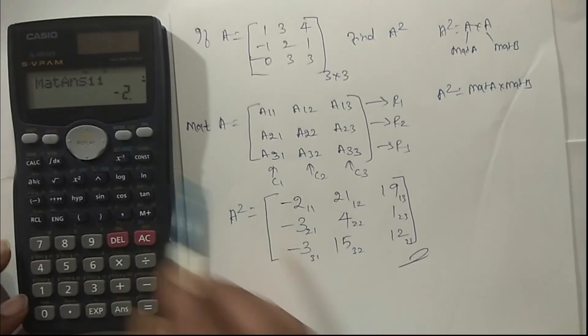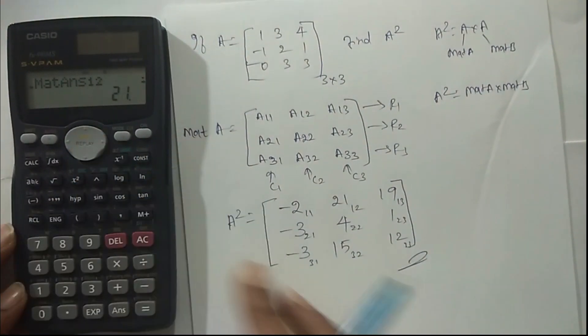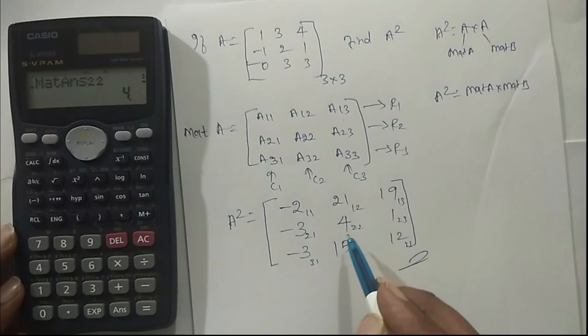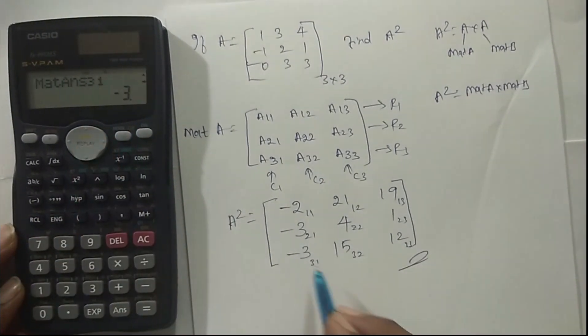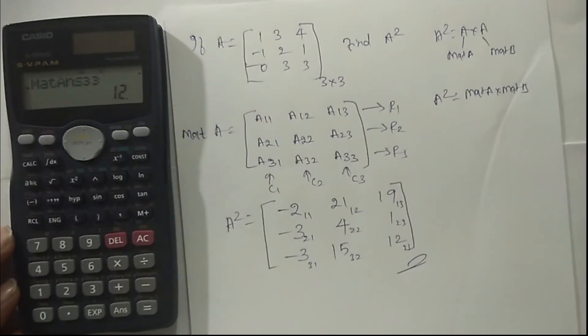Just scroll. A12 is 21, and A13 is 19. A21 is minus 3, A22 is 4, and A23 is 1. A31 is minus 3, A32 is 15, and A33 is 12.